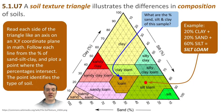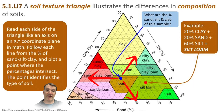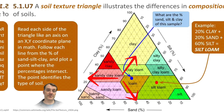So what are the percentages of sand, silt, and clay where the blue dot is in the bottom center in the loam part of soil? If you came up with 40% sand, 35% silt, and 25% clay, you understand how to read a soil triangle.